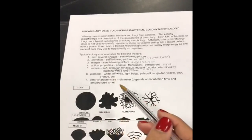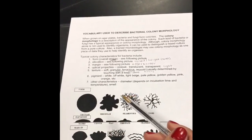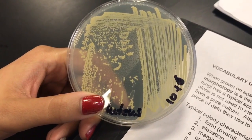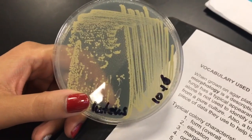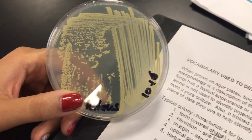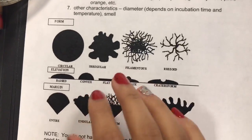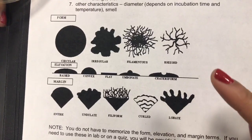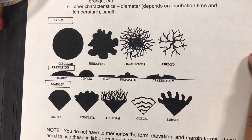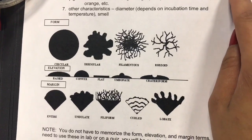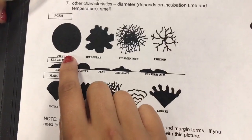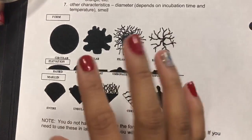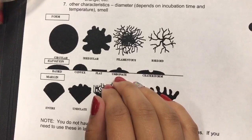We're going to use this streak plate to practice colony morphology and identify the appearance of these colonies. We'll go through page 44 to help characterize the bacteria. This streak plate is a pure culture, and its overall form or shape is circular. Its elevation is either raised or convex — both would probably be appropriate in this case.